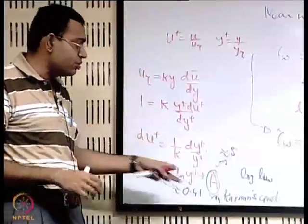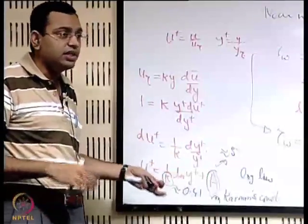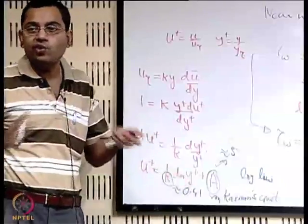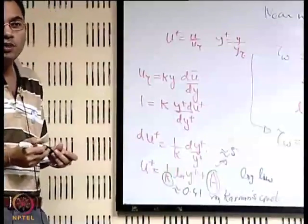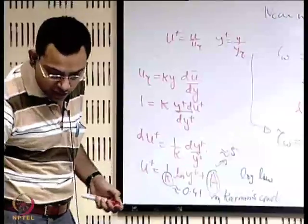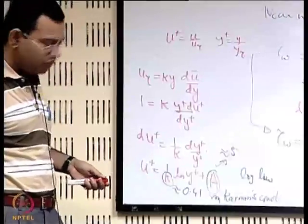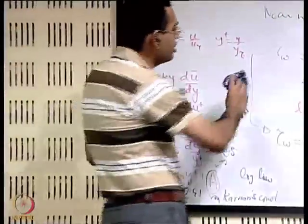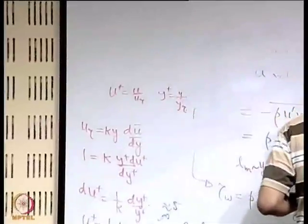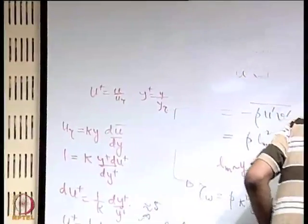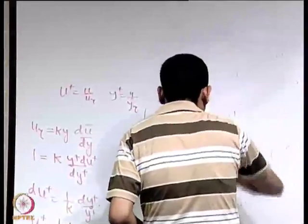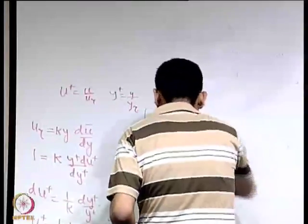Although some argue kappa could be 0.39, 0.40, or 0.42, roughly 0.4 is consistently obtained from all experiments — a remarkable universal result. We have now discussed the two limiting cases; let us stretch further to get the picture of the entire near-wall velocity distribution, not just the limiting or overlapping cases.